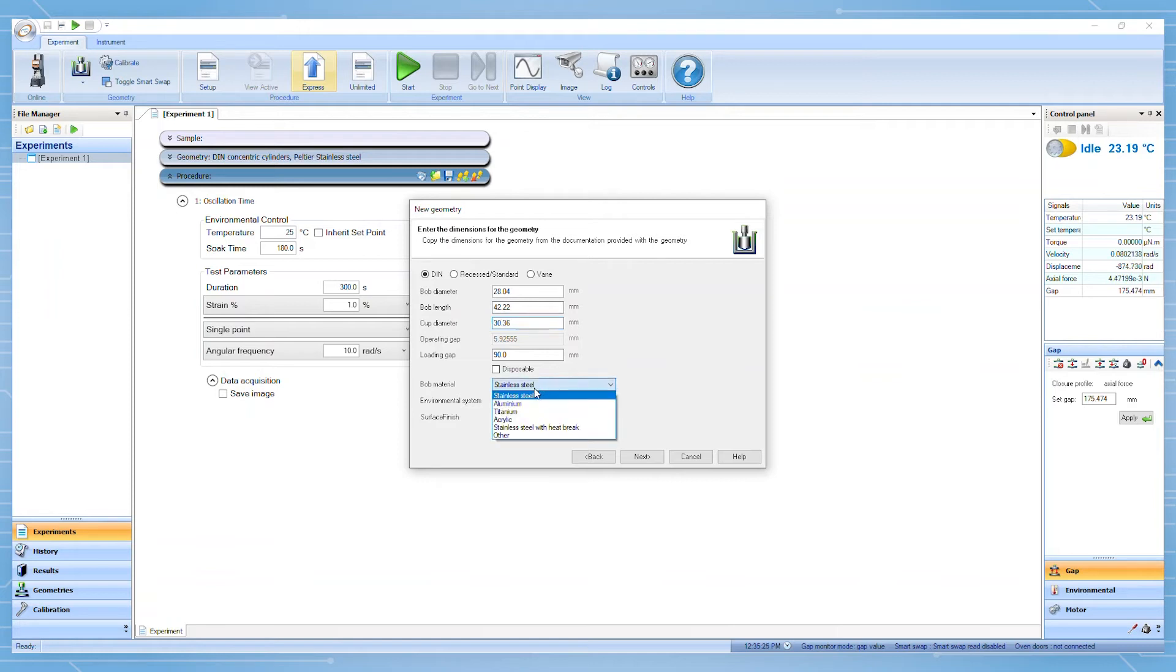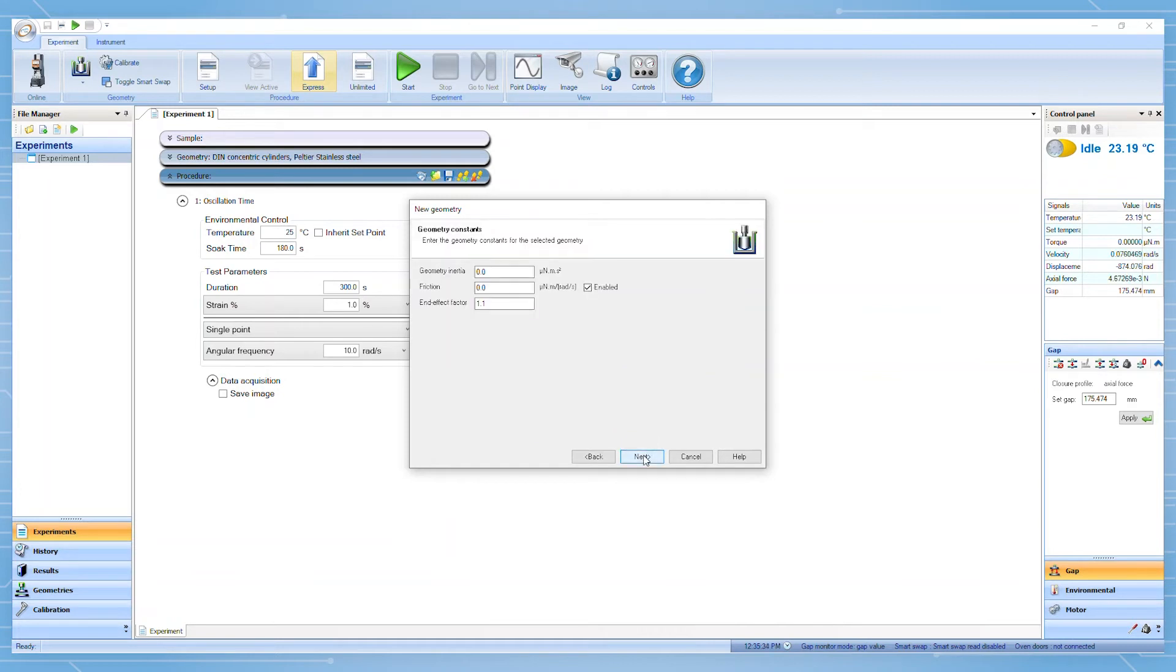Exact geometry specifications will depend on the rotor, such as the DIN, recessed, or vane, and the cup, such as a traditional cup or the double wall cup.